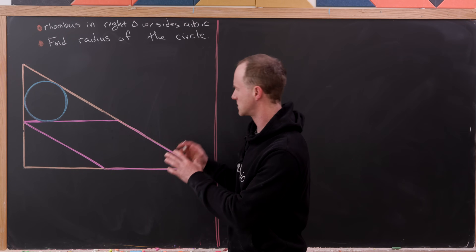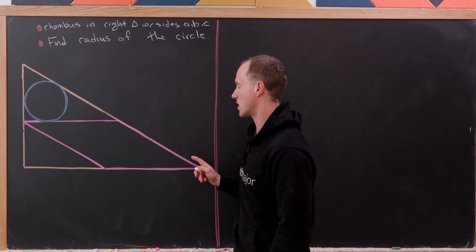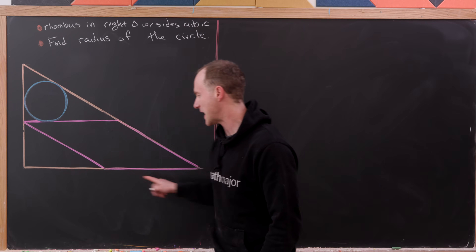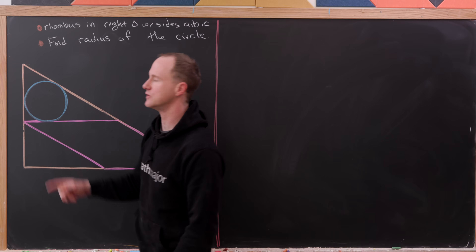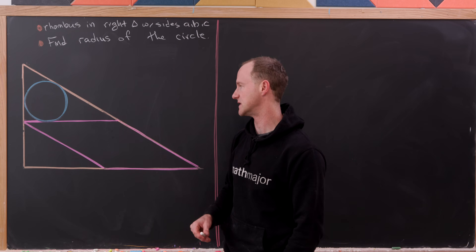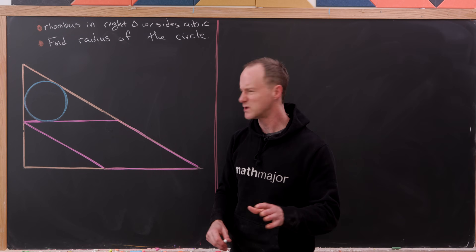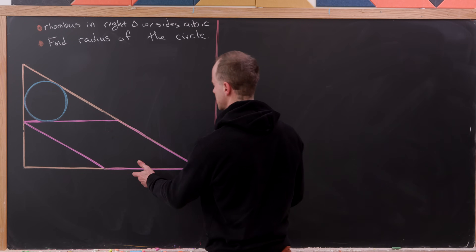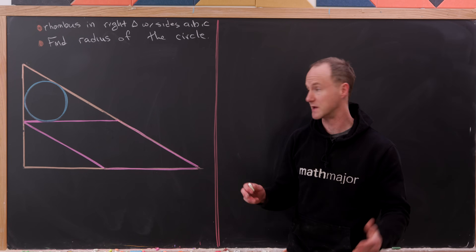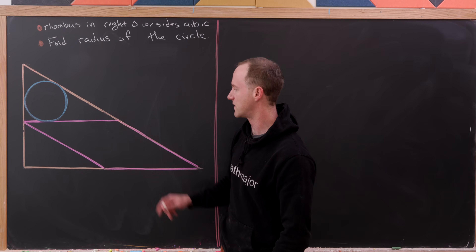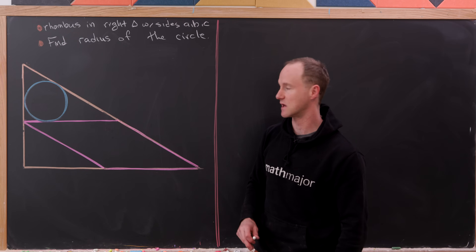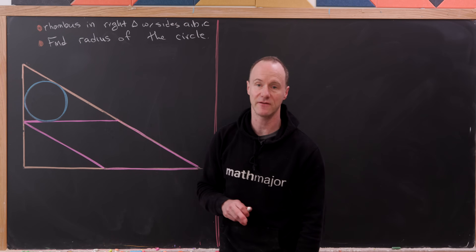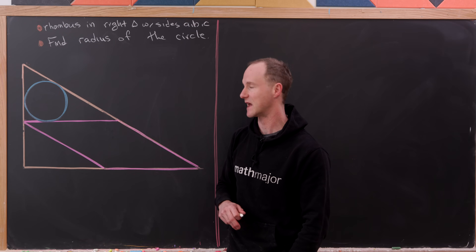Let's look at this nice geometry problem. We've got a right triangle with sides A, B, and C. The base has length A, the altitude has length B, and the hypotenuse is length C. We'll inscribe a rhombus inside the triangle so that two sides of the rhombus are coincident with the hypotenuse and the base. Then in the small triangle on the top left, we'll inscribe a circle, and our goal is to find the radius of that circle.